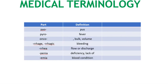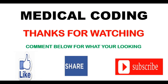Additional suffixes and terms: pyo means pus; pyro means fever; onco means bulk or volume; -rrhagic means bleeding; -rrhea means flow or discharge; -penia means deficiency or lack of; -emia means blood condition. This concludes the session on medical terminology.